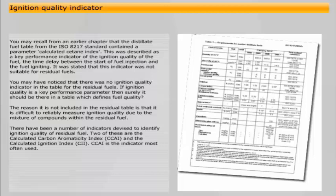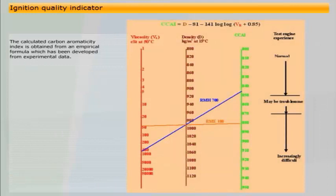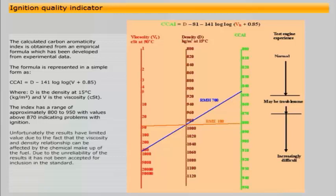CCAI is the indicator most often used. The Calculated Carbon Aromaticity Index is obtained from an empirical formula which has been developed from experimental data. The formula relating the density and viscosity of the fuel is as shown, and usually gives values in the range 800 to 950, with values above 870 indicating problems with ignition. The index has no units. Unfortunately the results have limited value, due to the fact that the viscosity and density relationship can be affected by the chemical make-up of the fuel. Due to the unreliability of the results, it has not been accepted for inclusion in the standard.